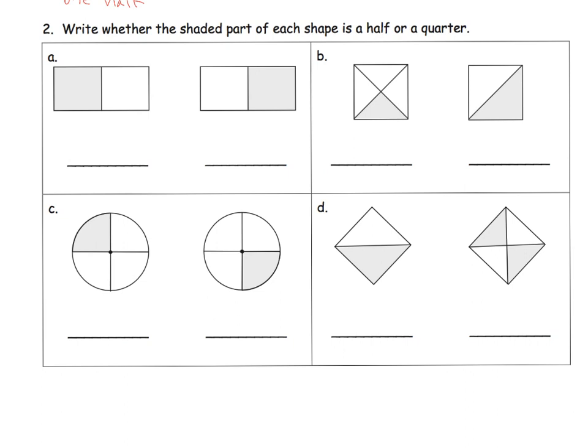And then question two, it says, write whether the shaded part of each shape is a half or a quarter. All right, so here, what do we have here? We have a half. What do we have here? We also have a half. And then we can go down here. What do we have here? This is a half.